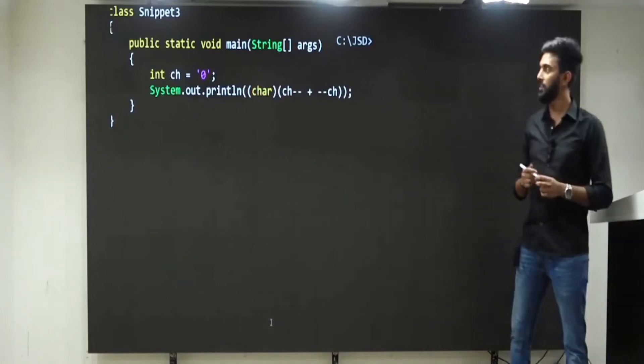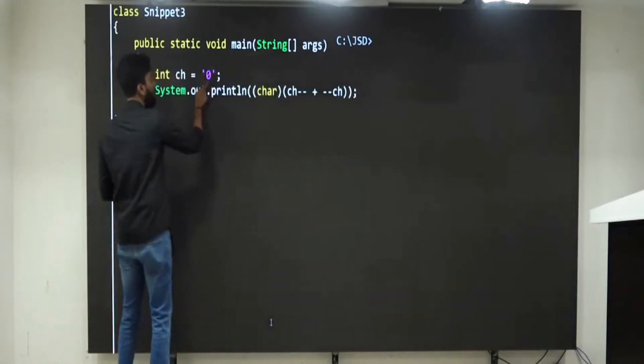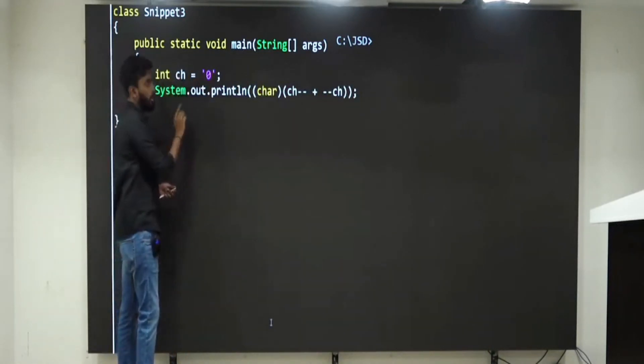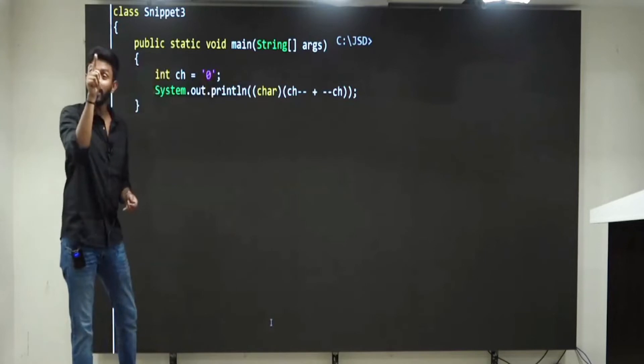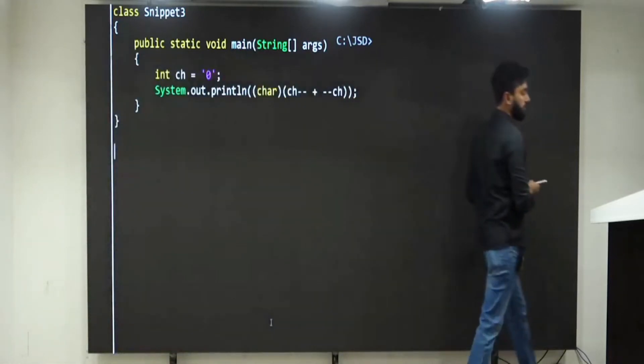Let us see how many of you can answer this. First of all, int ch equal to 0. Now obviously everyone knows 0 will not be stored because single quotes means this is a character. Character 0, not integer 0. What is the ASCII value of 0, you may ask?